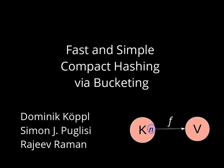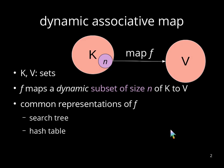The key idea is to represent this dynamic associative map f. In detail, we have two sets K and V, and we have a dynamic subset of K with cardinality n, and f maps from the subset to V. Common representations of f are search trees and hash tables.